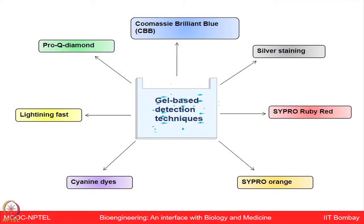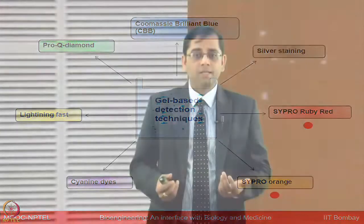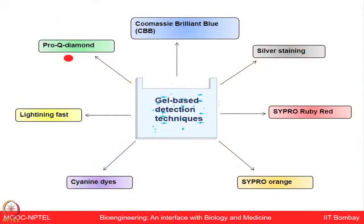So you have started with protein immobilized in the IPG strip via rehydration, done the first dimension separation by isoelectric point, equilibrated the strips, and now separated proteins on the SDS-PAGE gel based on molecular weight. Because everything is done on a transparent gel, you have no idea what has been separated until you add staining reagents. The most commonly used staining reagent is Coomassie Brilliant Blue, but you can also use silver staining. More sensitive dyes include SYPRO Ruby, Pro-Q Diamond for PTM-level analysis, and cyanine dyes for very sensitive detection.